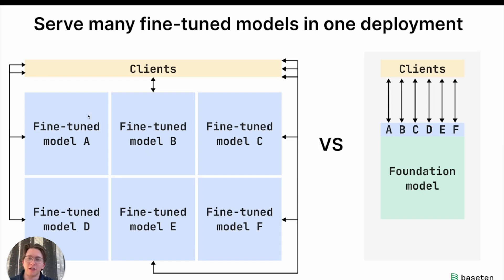So rather than serving every fine-tuned model on its own deployment, what if we could just serve the foundation model, which is like 99% the same with each of these fine-tunes, and then just layer in those fine-tuned models on top of it? Well, it turns out we can if we do our fine-tuning with something called LoRa.